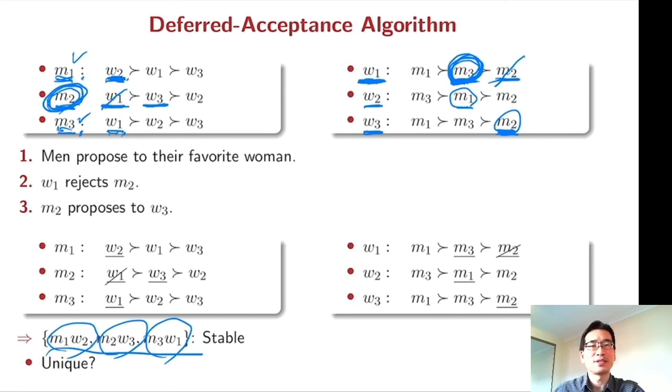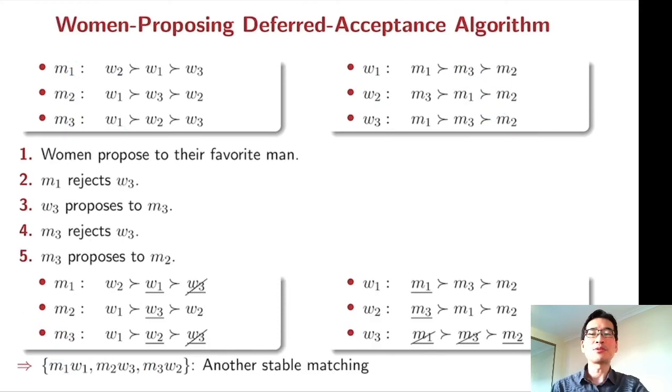The question might be, is there any other stable matching? You may want to think about another algorithm. Instead of men proposing, women propose to their preferred man. So let's think about this process. So women propose to their favorite man.